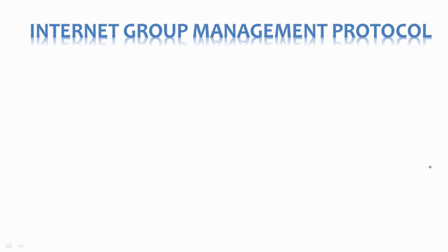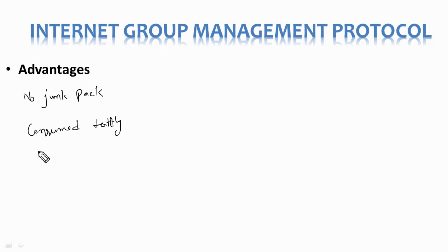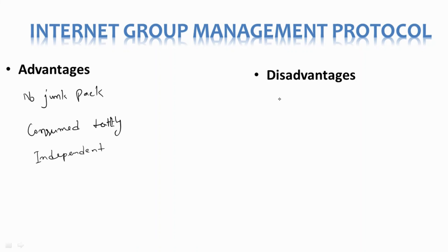Let's look at some advantages and disadvantages of IGMP. The advantages are: IGMP efficiently transmits multicast data to receivers so no junk packets are sent to the host, showing optimized performance; bandwidth is consumed efficiently as all shared links are connected for multicasting; and hosts can leave or join a multicast group whenever they want. The disadvantages are: IGMP does not provide good efficiency in filtering and security, and due to the lack of TCP, network congestion can occur. IGMP is also quite vulnerable to attacks such as DoS or DDoS attacks.